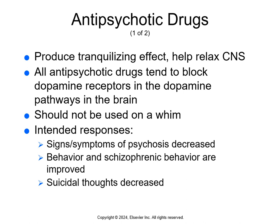All antipsychotic drugs produce a tranquilizing effect and help relax the central nervous system. They block dopamine receptors and the dopamine pathways in the brain — these need to be prescribed. The intended response is for the signs and symptoms of psychosis to be decreased, schizophrenic behavior to be improved, and suicidal thoughts to be decreased. One theory is that these disorders develop because the brain overreacts to neurotransmitters. Heredity can also play a part in the development of psychotic disorders.